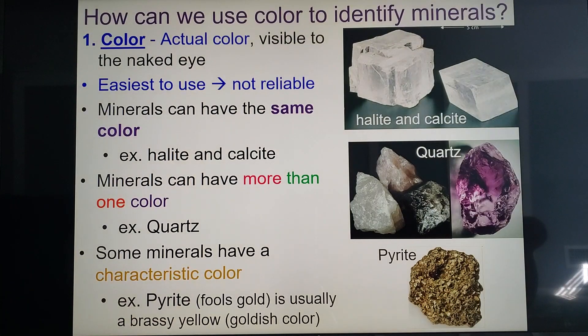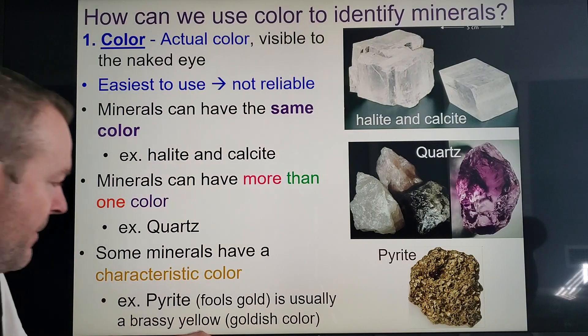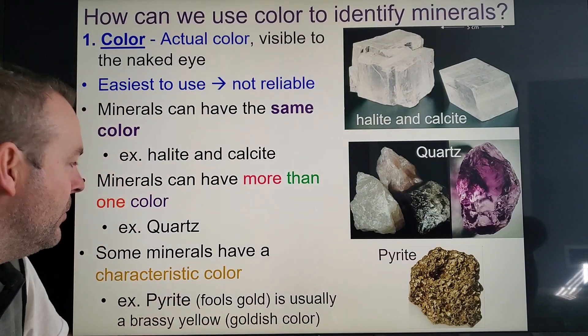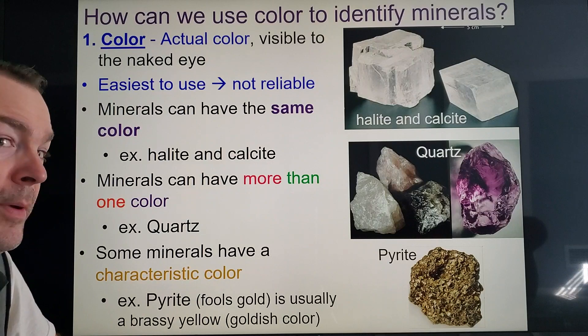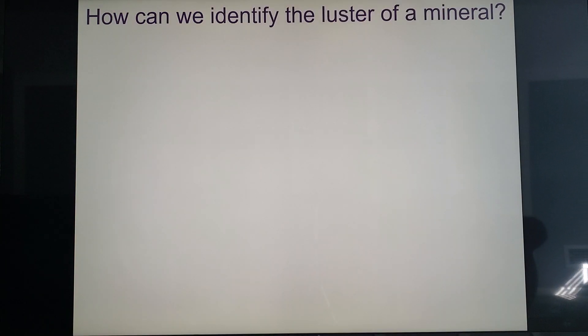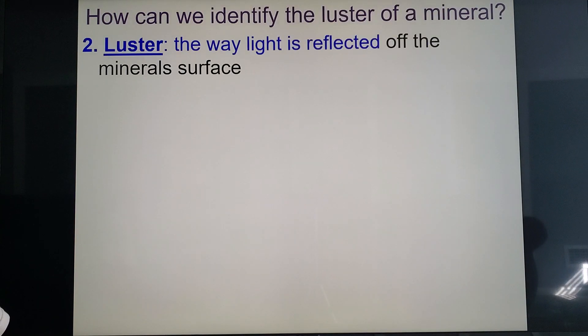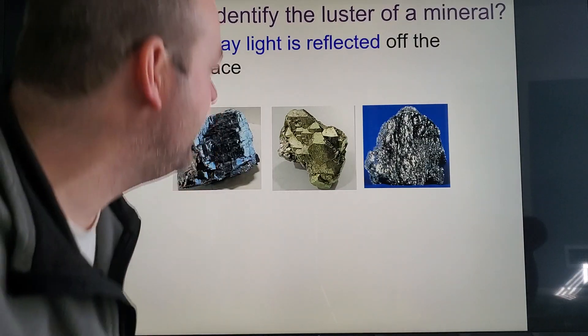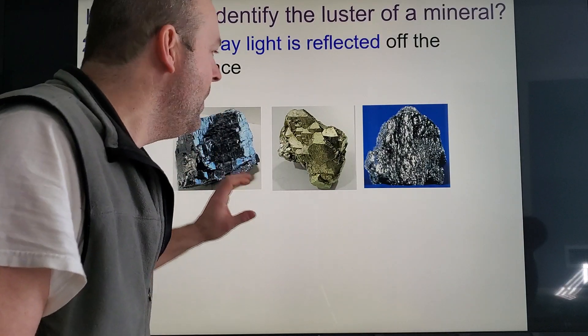Pyrite only has one color, so for pyrite, color is helpful — it depends on the mineral. Pyrite, by the way, is fool's gold, so don't be fooled. You better do the other tests. Then there's luster — how it reflects light.